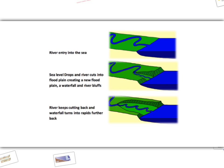As the sea level drops, the river cuts into the existing floodplain. This creates a new lower floodplain, and the old floodplain is now a river terrace. The river continues to erode and assume its previous long profile.